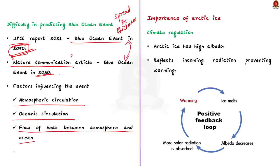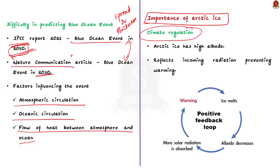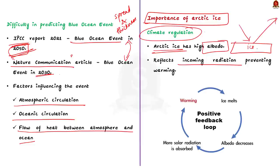Let us see the importance of Arctic ice. The Arctic ice acts as a natural reflector known as the albedo effect. It reflects a significant portion of the incoming solar radiation back into space, thus helping to regulate global temperatures. The presence of ice helps to cool the planet by reducing the amount of solar energy absorbed by the Earth's surface. As the ice melts and reduces in extent, more solar radiation is absorbed and this contributes to further warming through a positive feedback loop.